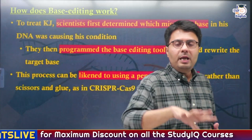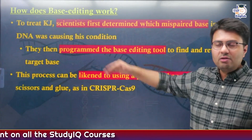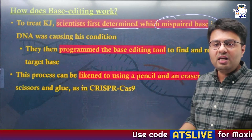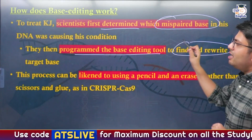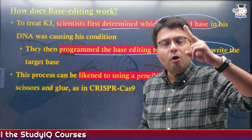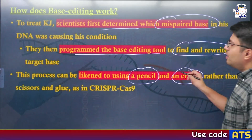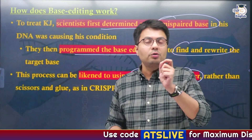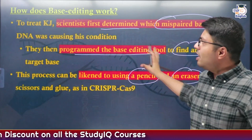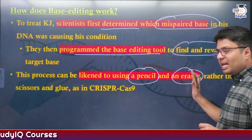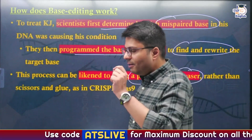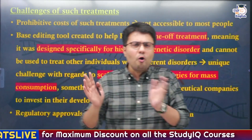This is the biggest difference between CRISPR-Cas9 and base editing. To treat KJ, scientists first determined which was the misplaced base in his DNA causing the genetic condition, then reprogrammed the base editing tool to find and rewrite the target base. As compared to CRISPR-Cas9 which is like using molecular scissors, base editing can be equated with using a pencil and eraser — rather than cutting, you simply remove the incorrect part and correct it accordingly.